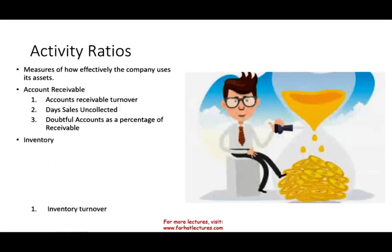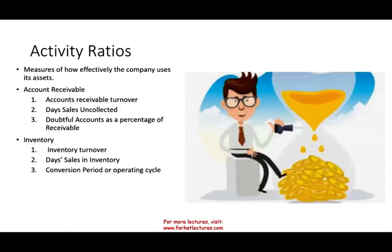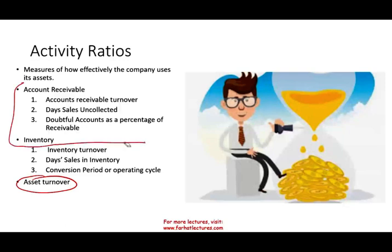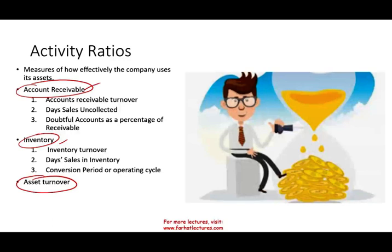We're going to look at inventory turnover, days sales in inventory, and the conversion period or the operating cycle. And we're going to look overall at asset turnover from a macro perspective. Notice that accounts receivable and inventory are both part of the current ratio, so all the ratios go hand in hand. Keep in mind as we look at inventory and account receivable turnover, think about the current ratio and the acid test ratio as well.